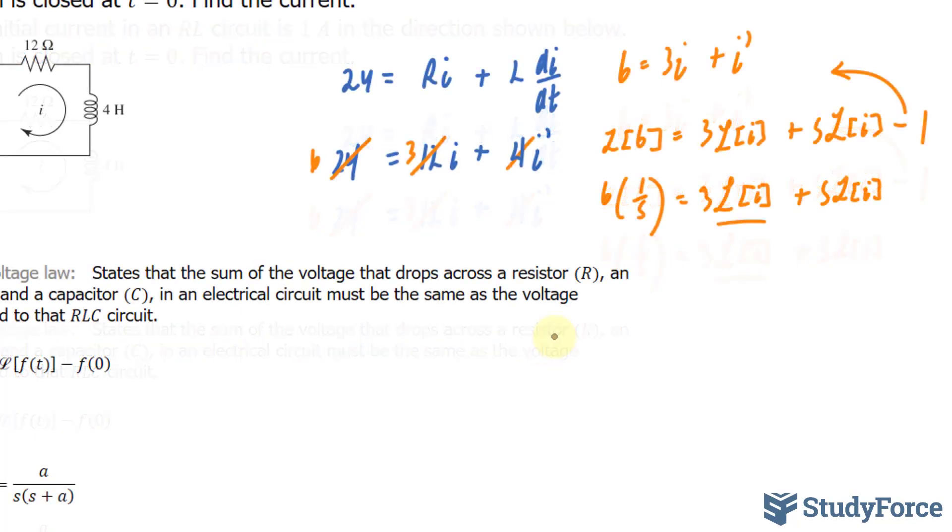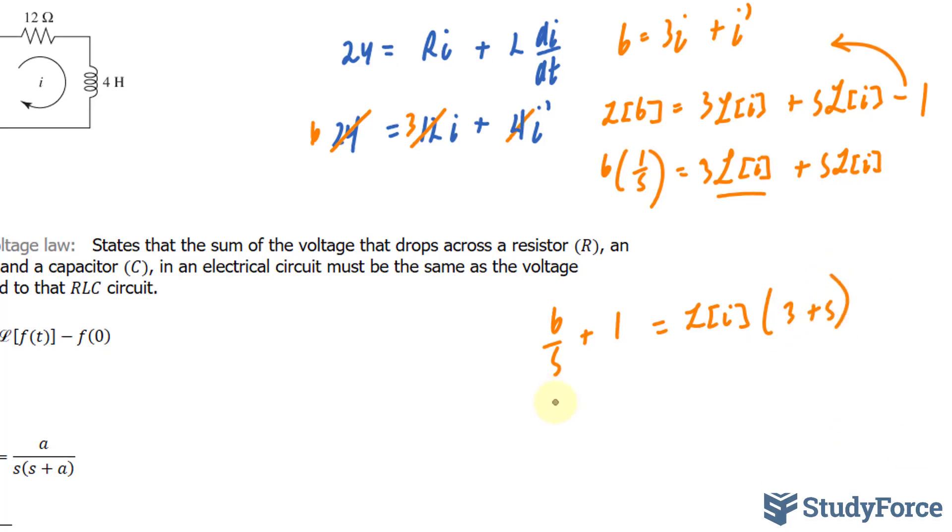So now we have 6 over s plus 1 is equal to, I'll factor out the Laplace transform here of I, bracket 3 plus s. Dividing both sides by 3 plus s gives us the expression 6 over s times 3 plus s plus 1 over 3 plus s.